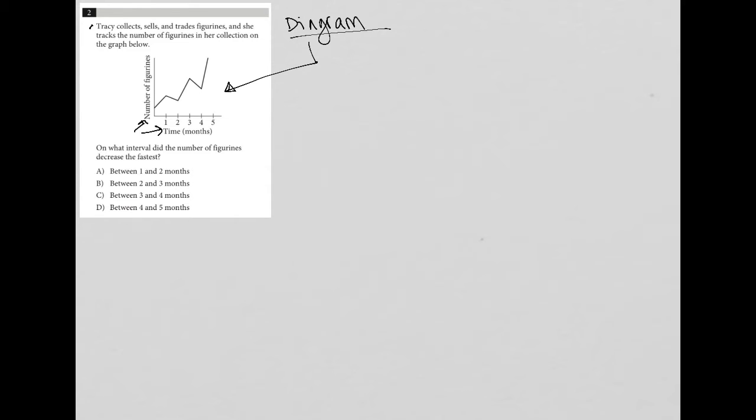So the question tells us that Tracy collects, sells, and trades figurines and she tracks the number of figurines in her collection on the graph below. So this graph is just the number of figurines in Tracy's collection month after month. It looks like it goes up and then down and back up and down and up.